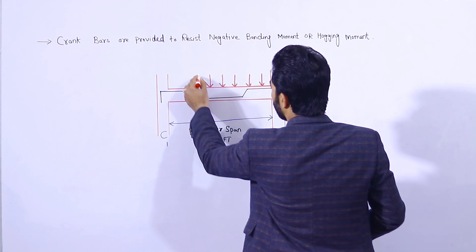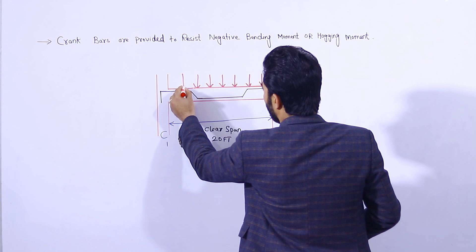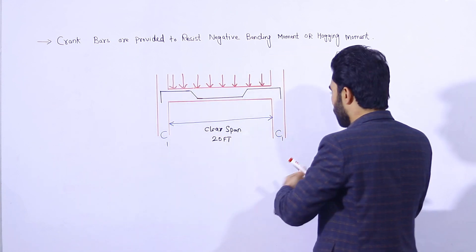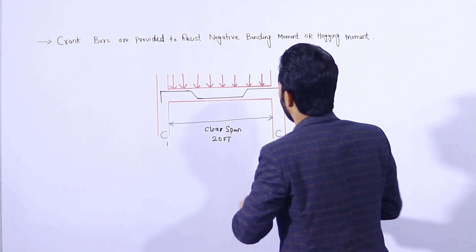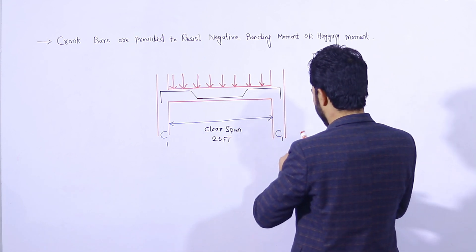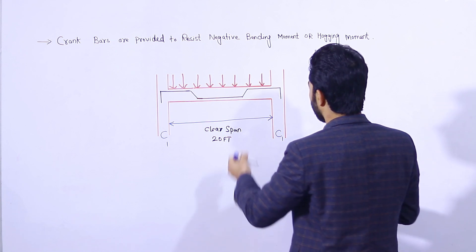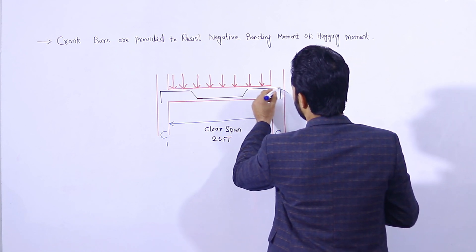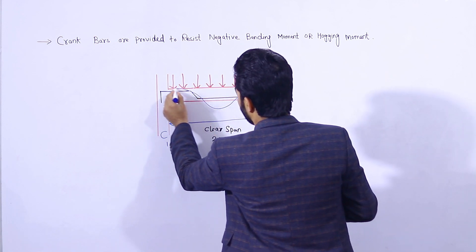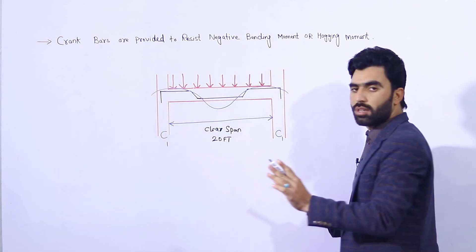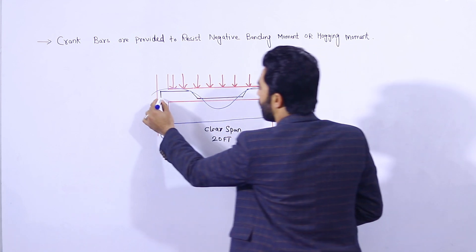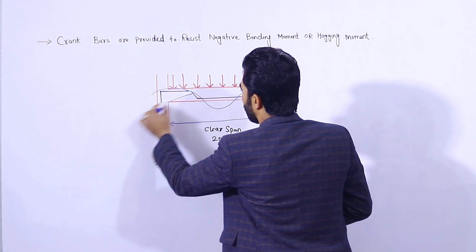When the load is applied on the top of this beam — suppose these are the loads due to the structure load — the beam will make a shape like this. So here we provide the crank bar.